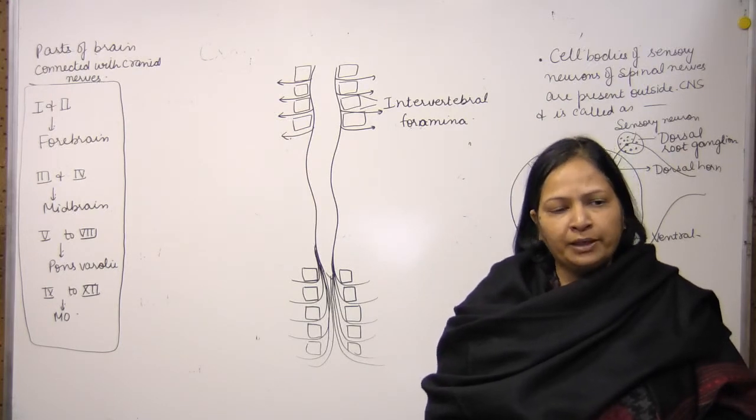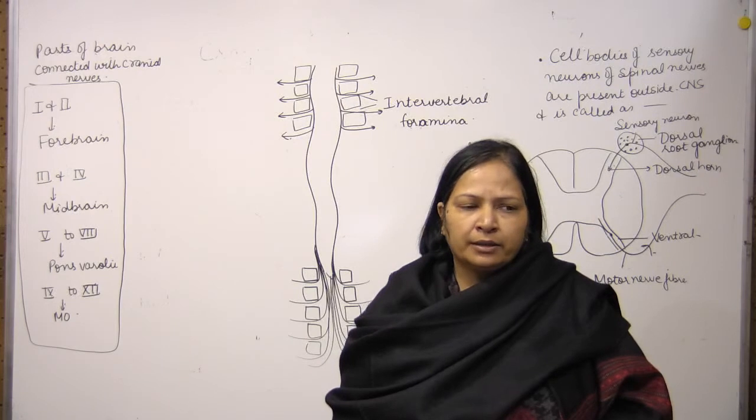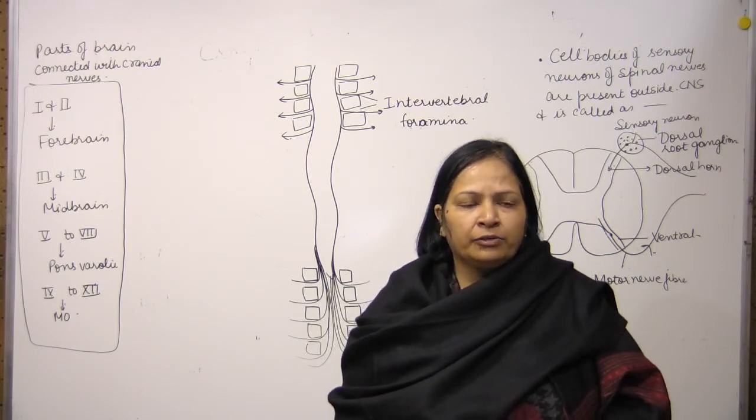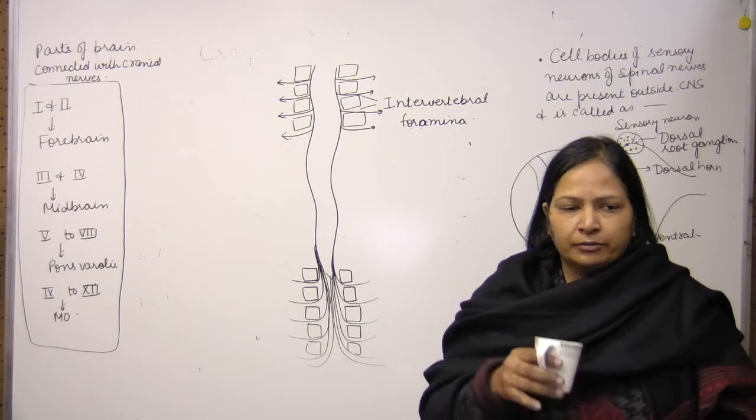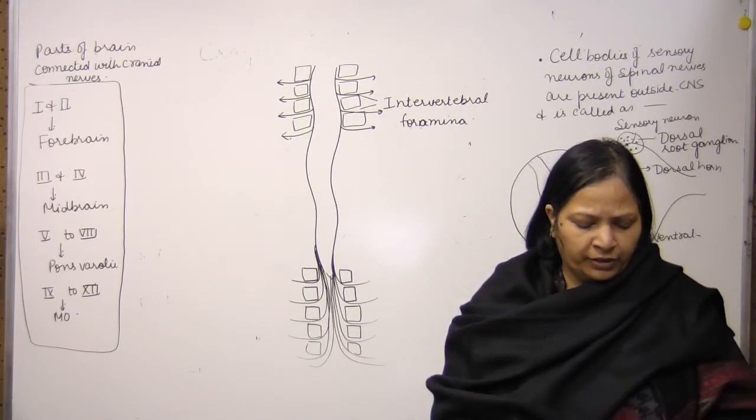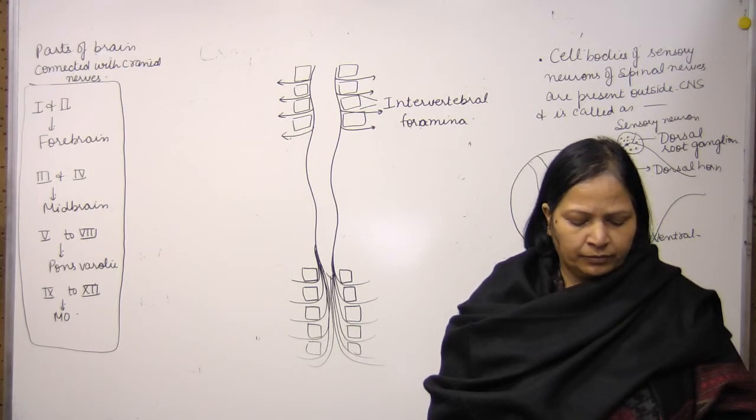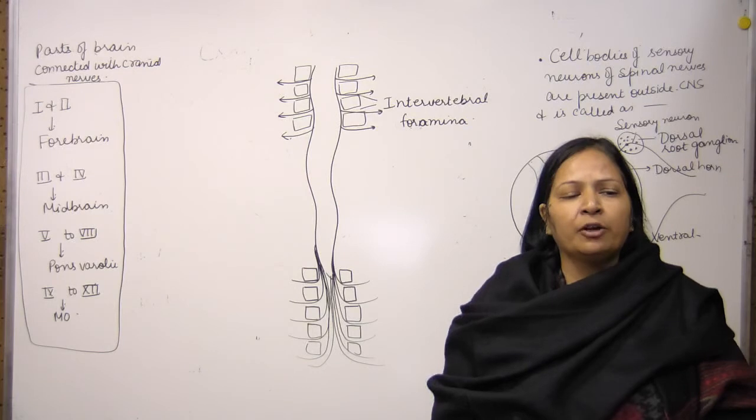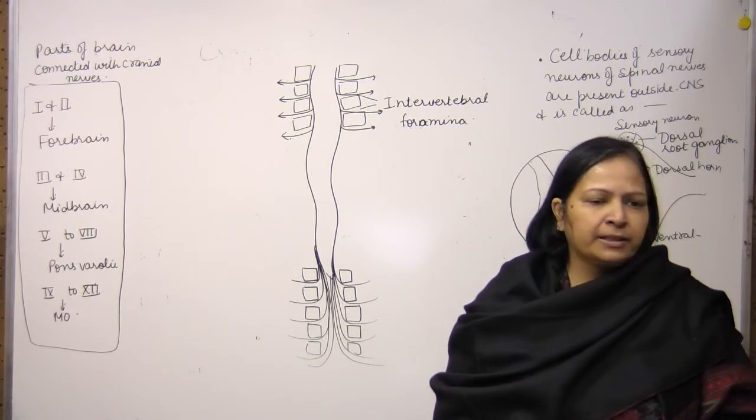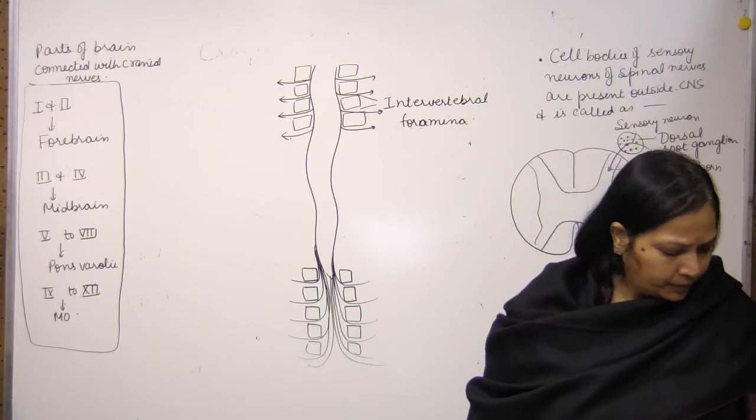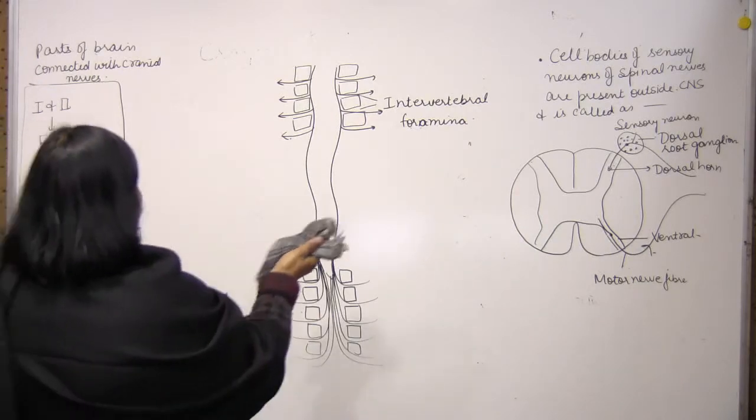It is called autonomic because it does not involve the will of a person. It does not involve the will of the person, and the person is not aware of such movements.